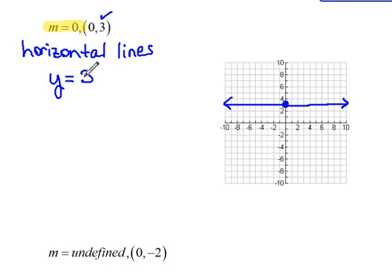Horizontal lines all come in the form of y equals some number, and they are all flat horizontal, and they have a zero slope.